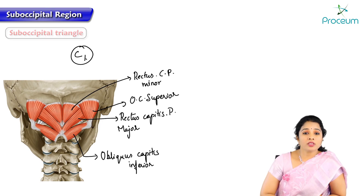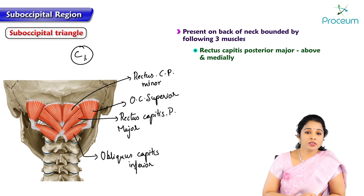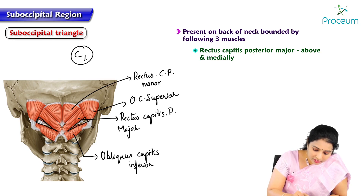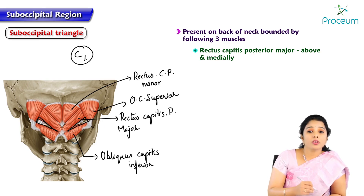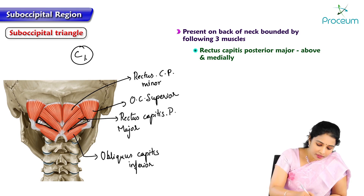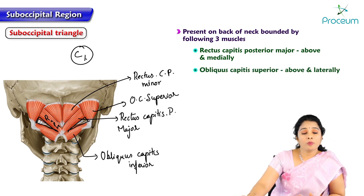The suboccipital triangle is present on the back of the neck, bounded by the rectus capitis posterior major muscle above and medially. This small triangle, which you can appreciate between these muscles, is the suboccipital triangle. Above and medially it is bounded by rectus capitis posterior major, and obliquus capitis superior is above and laterally.